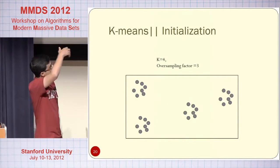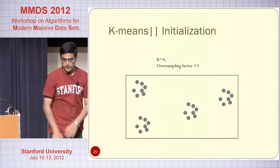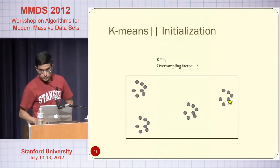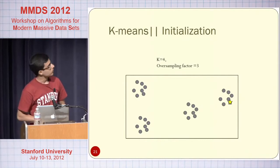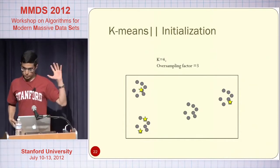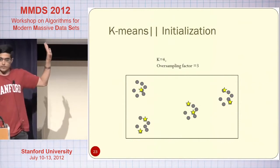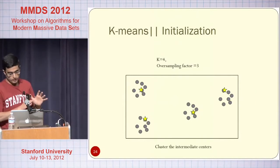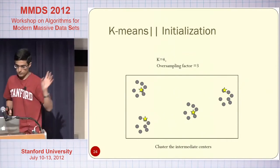Before describing the algorithm formally, here is an example. We have the familiar dataset with K equal to 4. We have an oversampling factor — let's say 3 in this case. In the beginning we pick one point, say uniformly at random. Then we compute the squared distances but instead of choosing one new center, we pick three new centers — maybe two here and one over there. Then we compute squared distances to this new set of centers and pick three more points — maybe two here and one there. At this point the initialization is done. If you want exactly K centers, you can recluster the intermediate centers to get K centers. This example doesn't show the full power of K-means Parallel because the number of clusters is small, but it shows how it works.